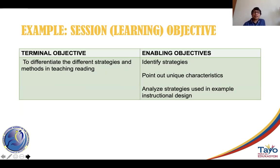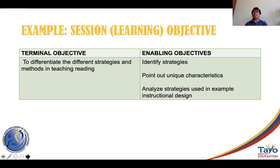For the session level, taking the terminal objective derived from the training enabling objective — for example, 'differentiate the different strategies and methods in teaching reading' — the session enabling objectives would now reflect specific demonstrable behavior: identify strategies, point out unique characteristics, and analyze strategies used in example instructional design.